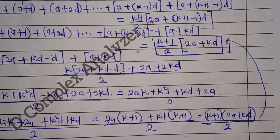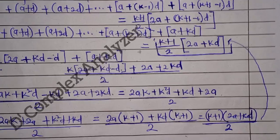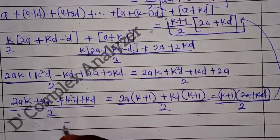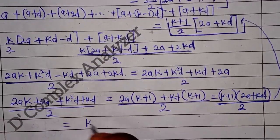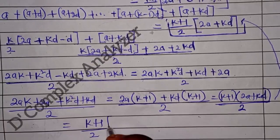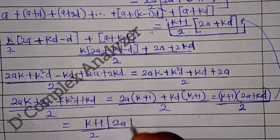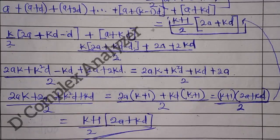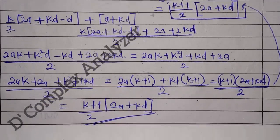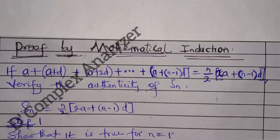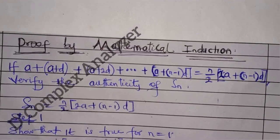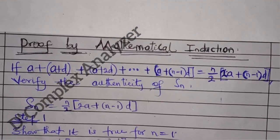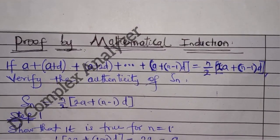This completes the proof. So this equals K plus 1 over 2 into 2A plus KD, which verifies the authenticity of S_N. I hope you get it — this is it for this particular question. Please subscribe, like, and share this video with your friends and classmates.